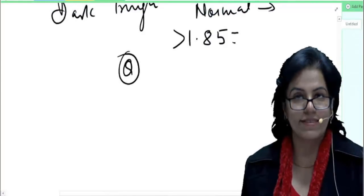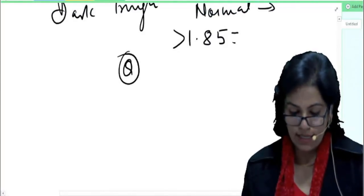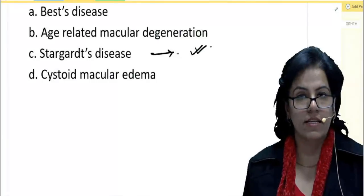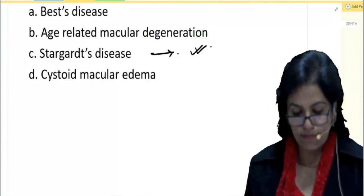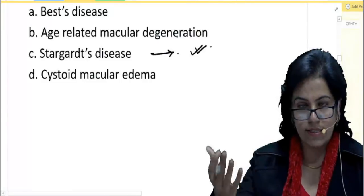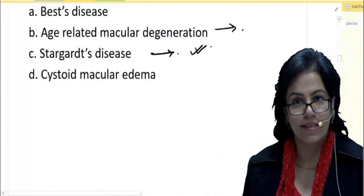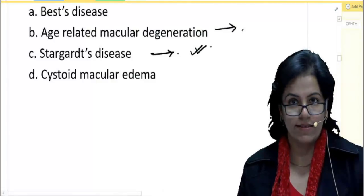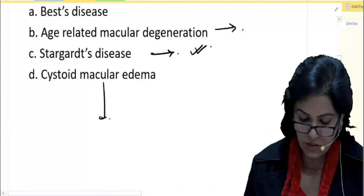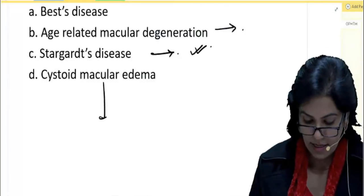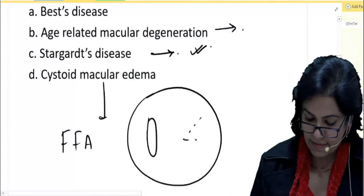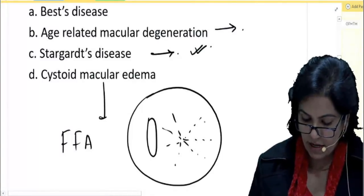Silent choroid is your exam question. Then what was the next option? ARMD—I think everybody knows age-related macular degeneration. What will be on examination? You can see the drusens in dry ARMD and you may see a neovascular membrane in wet ARMD. And talking about cystoid macular edema—the fluorescein and geographic finding of cystoid macular edema presents as flower petal pattern.